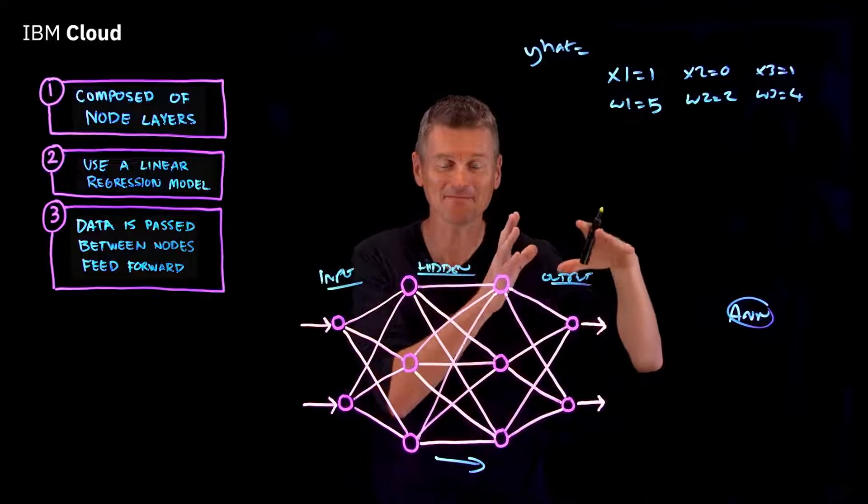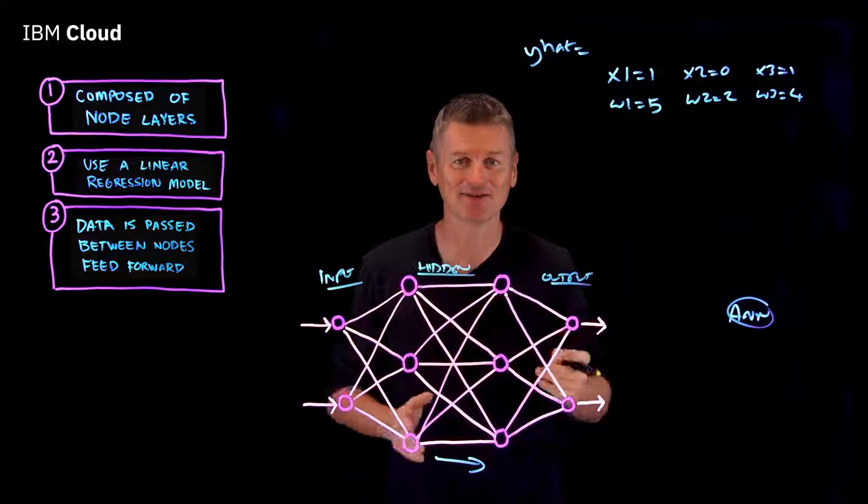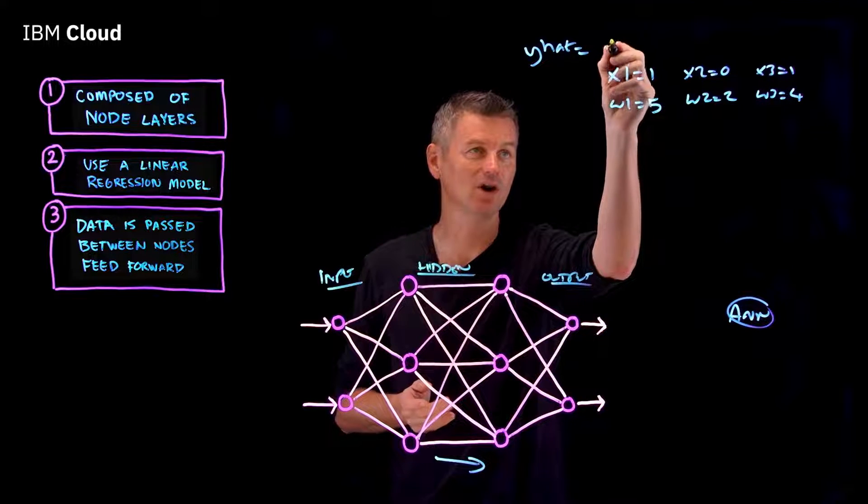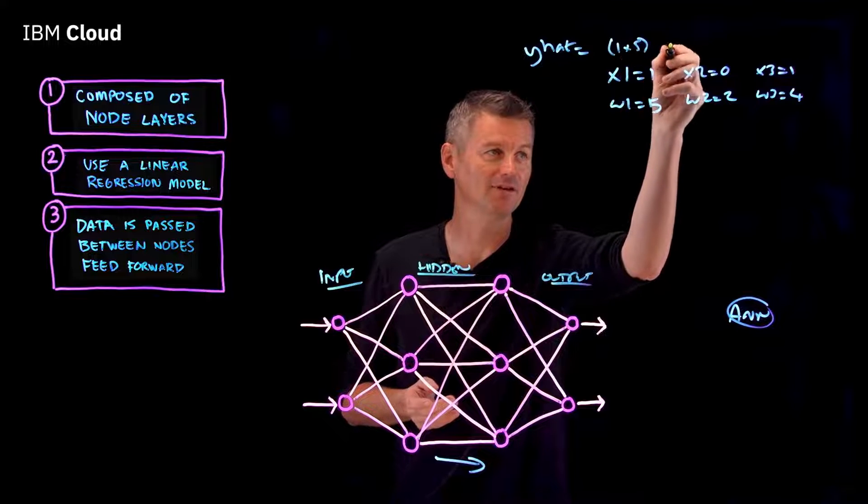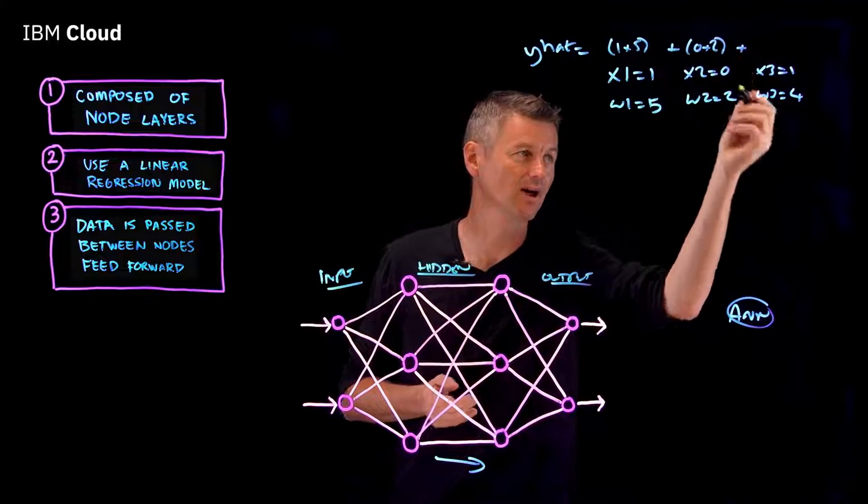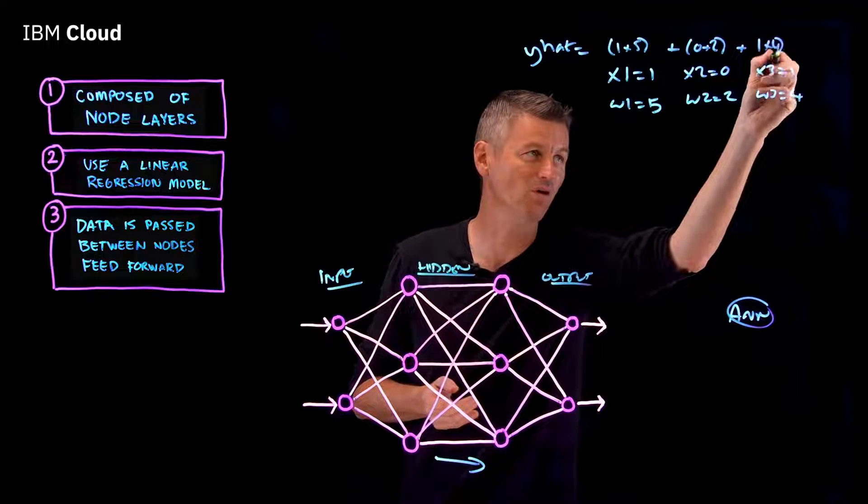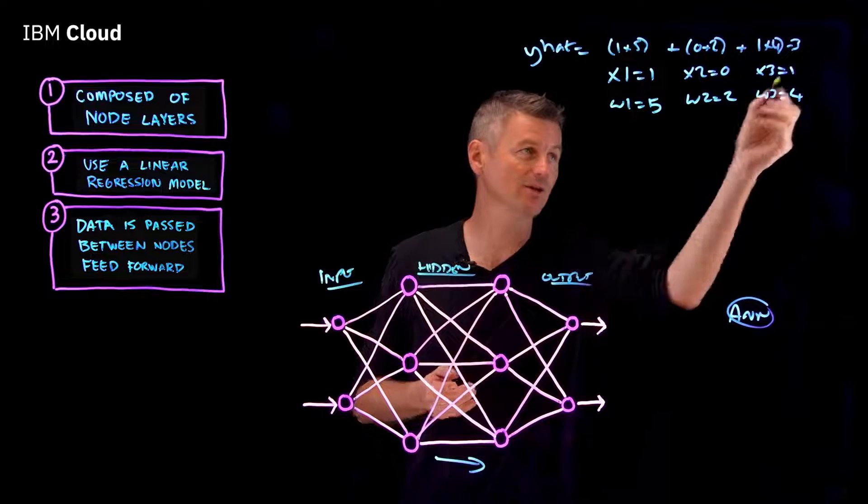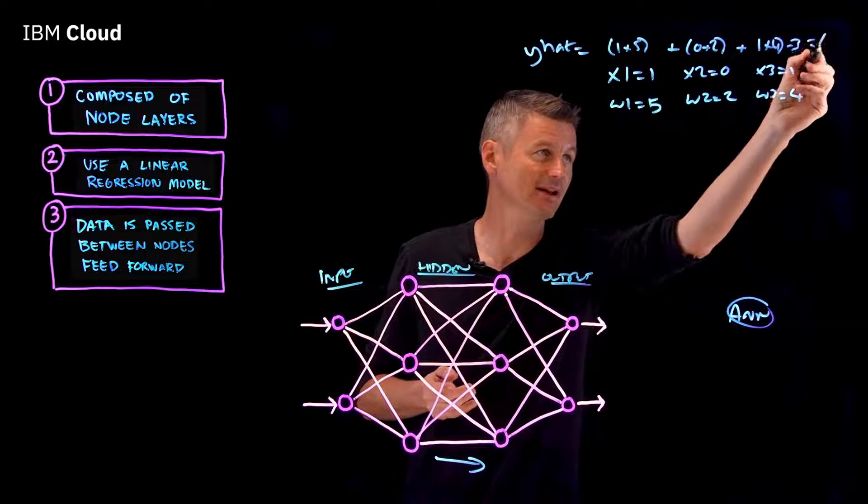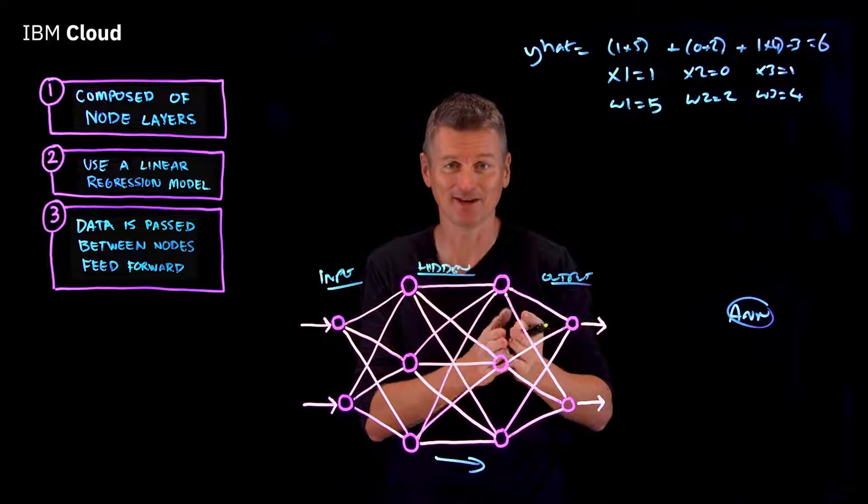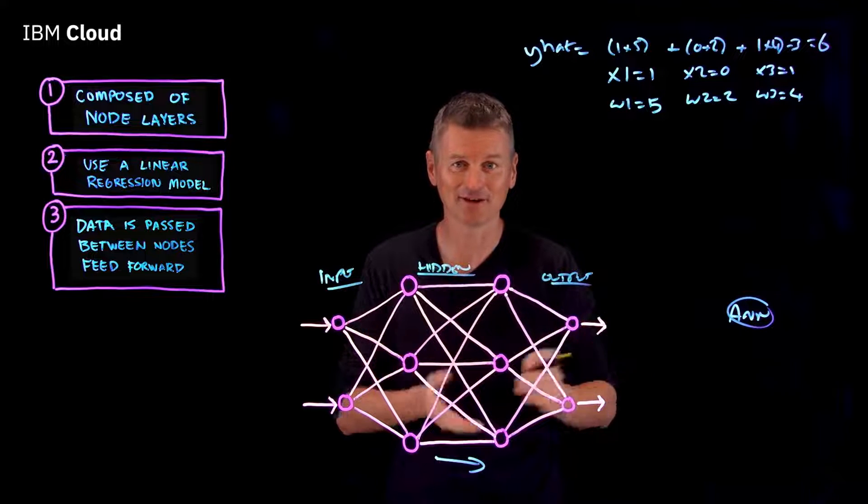Now, we can plug in these values into the formula to get the desired output. So y-hat equals one times five plus zero times two plus one times four, then minus three. That's our threshold. And that gives us a value of six. Six is greater than zero, so the output of this node is one. We're going surfing.